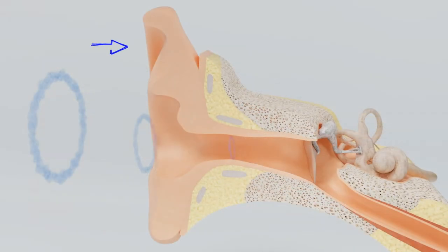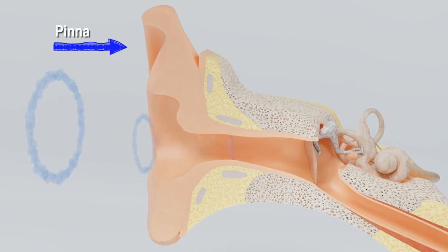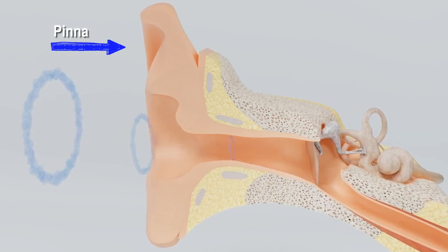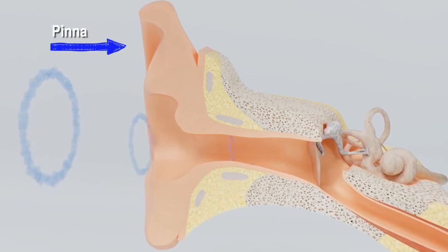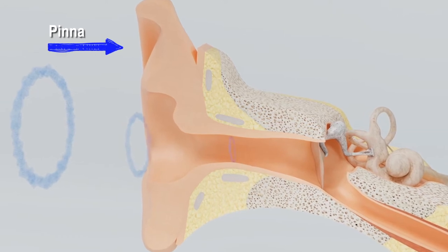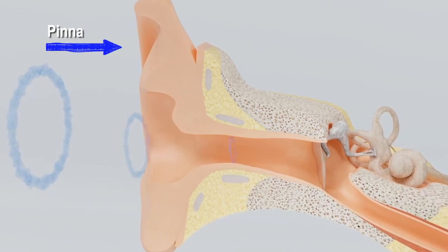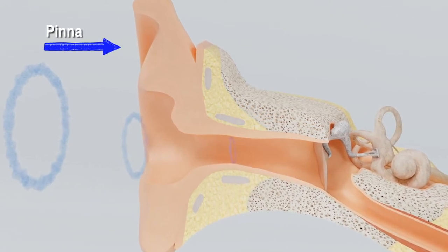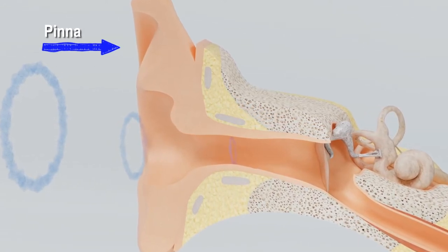The outer ear is the part of the ear that you can see. The pinna is the outermost structure that acts like a satellite dish, catching the sound waves and directing them into the ear canal. The ear canal then directs the sound waves to the eardrum.